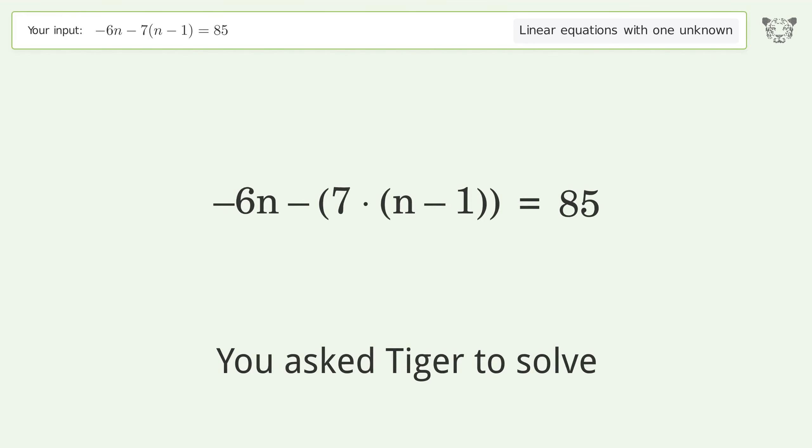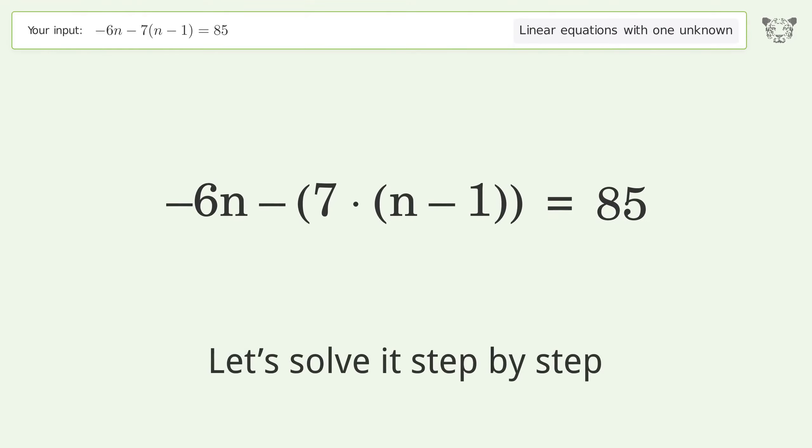You asked Tiger to solve this. This deals with linear equations with one unknown. The final result is n equals negative six. Let's solve it step by step. Simplify the expression.